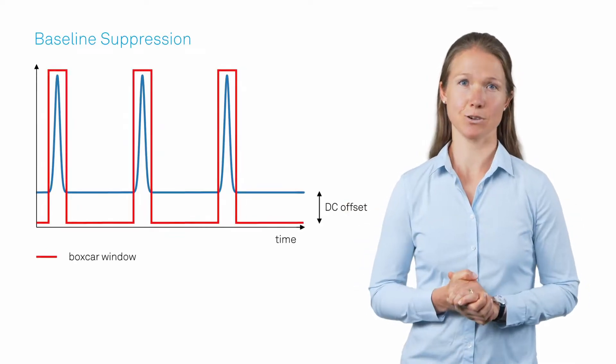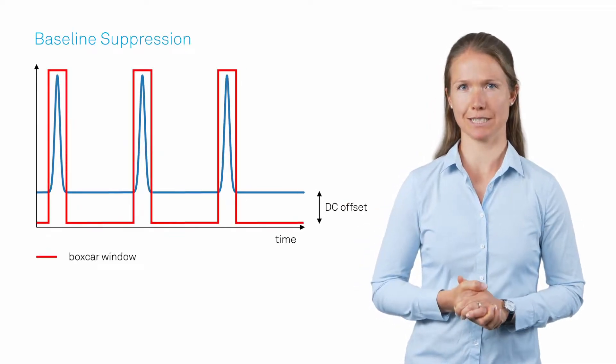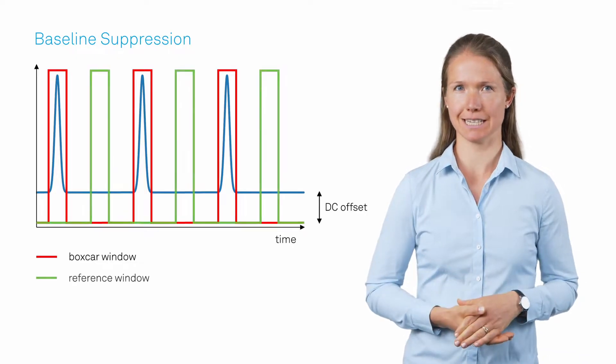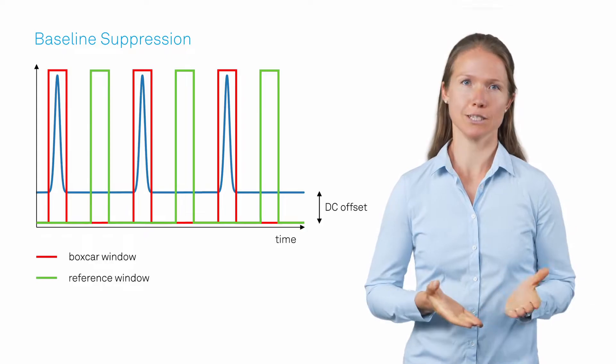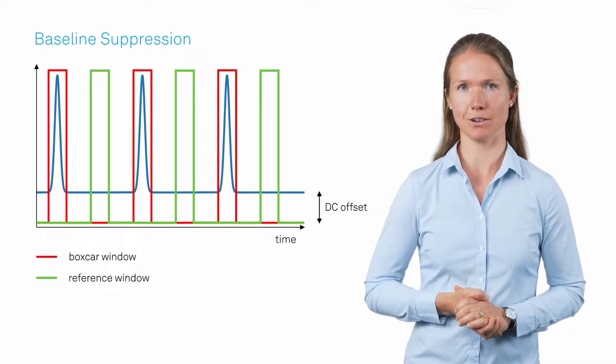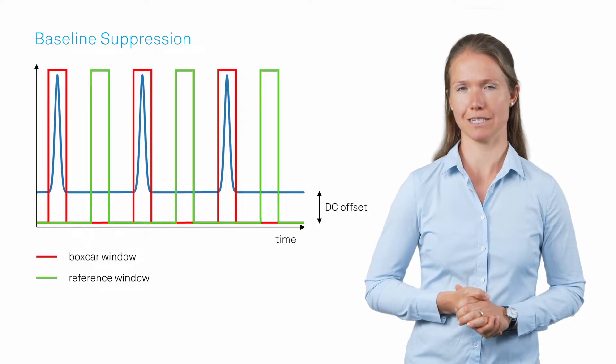As this filter function also captures the DC component of the signal, we can subtract it from the boxcar result by adding another window shifted in time. The use of such a reference window makes the measurement insensitive to DC offsets and slowly fluctuating noise floors.